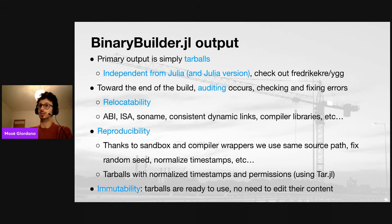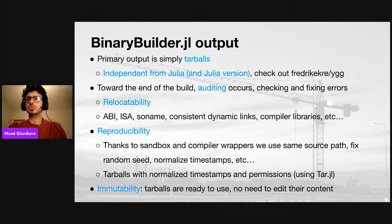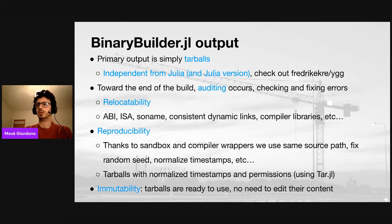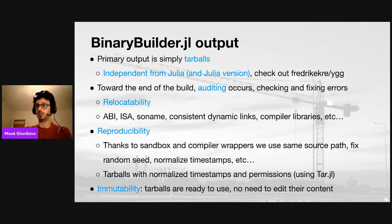The auditing makes sure that the libraries are relocatable, that we use the correct API for the target system, that the architecture is right. It fixes the soname of the library if necessary, checks the dynamic links so that all linked libraries are present, and so on. We are able to do reproducible builds — thanks to the sandbox and compiler wrappers, we always use a fixed source path, can fix the random seed of the compiler, normalize timestamps, and so on. The tarballs generated using the tar.jl package in Julia also have normalized timestamps and permissions — so the tarballs are completely reproducible.